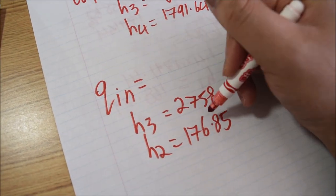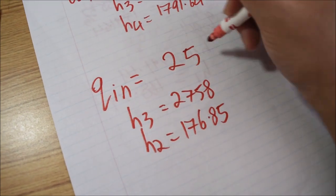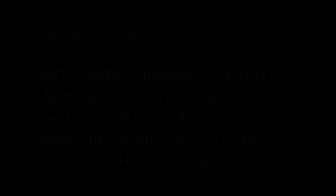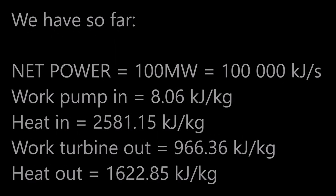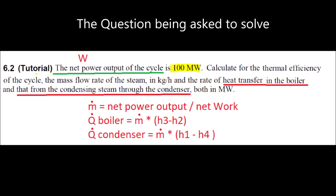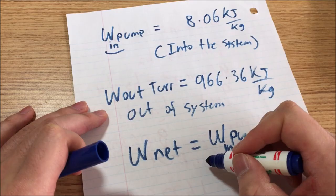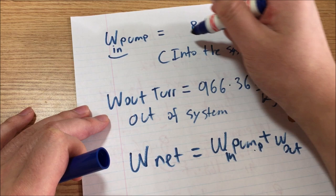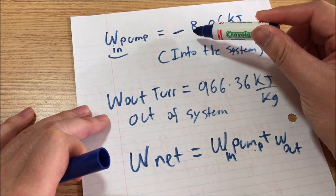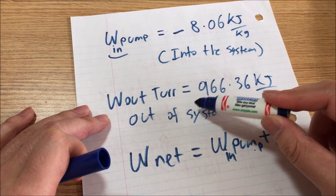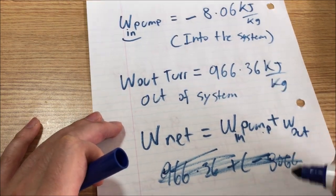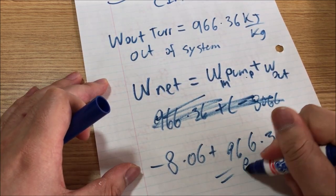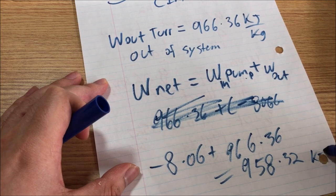For Q in, we do H3 minus H2, which gives us that value. The work of the pump in is in the system, therefore the work of the pump in is negative 8.06, and the work of the turbine out is 966.36. Therefore, the net work is negative 8.06 plus 966.36, which equals 958.32 kilojoules per kilogram.